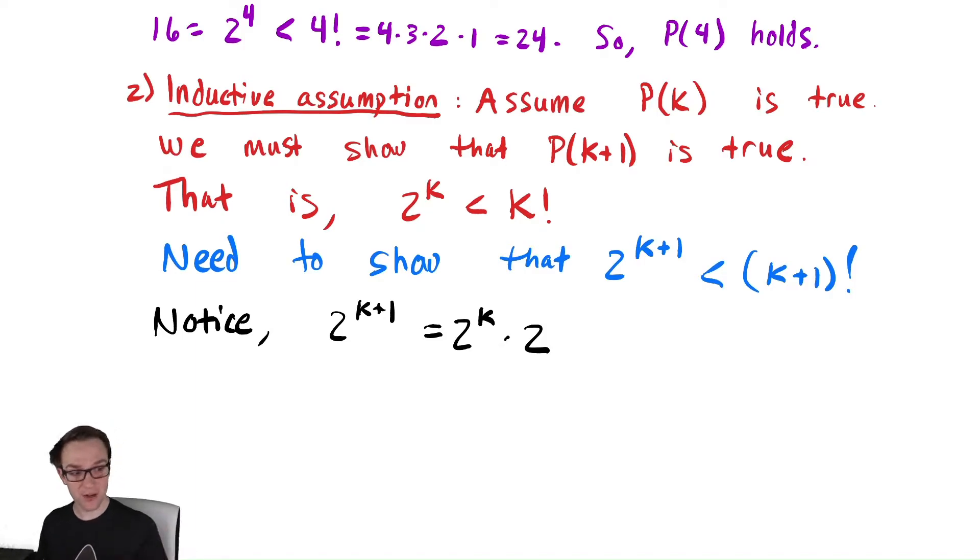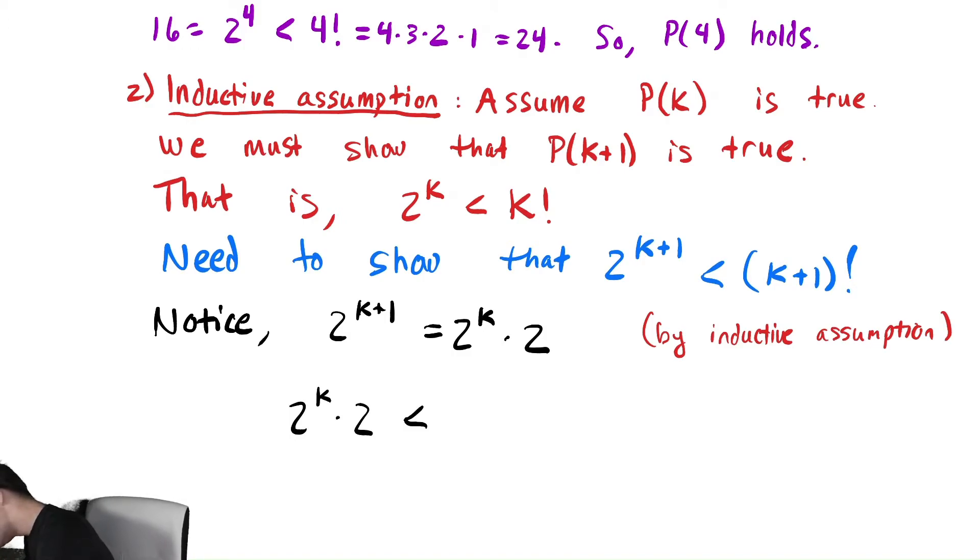And I notice about 2^k, because of my inductive assumption, I know 2^k is less than k factorial. Therefore, I can replace that 2^k with k factorial. So by inductive assumption, I know that I can make 2^k times 2 less than k factorial times 2.